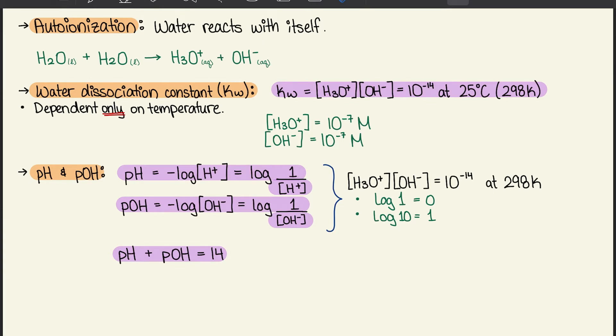Next we have pH and pOH. We use pH when discussing hydrogen ions. pH equals negative log of the hydrogen ion concentration, which is also equal to the positive log of 1 over hydrogen ion.